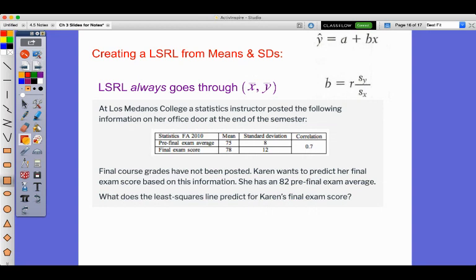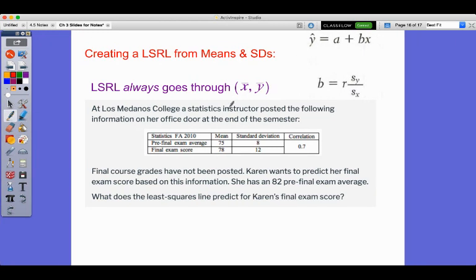We can create a least squares regression line if all that we know are the mean and the standard deviations and the correlation coefficient. The first thing that I do when I want to do this is I create the equation for my slope.